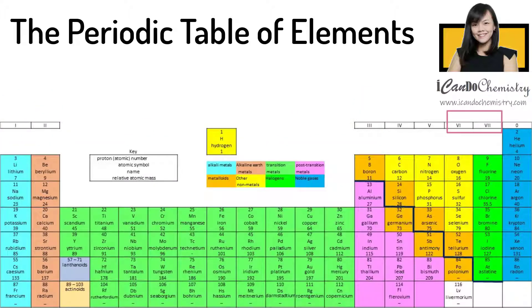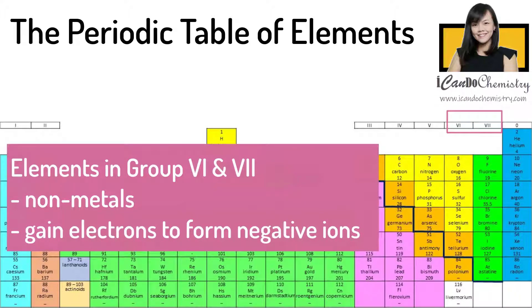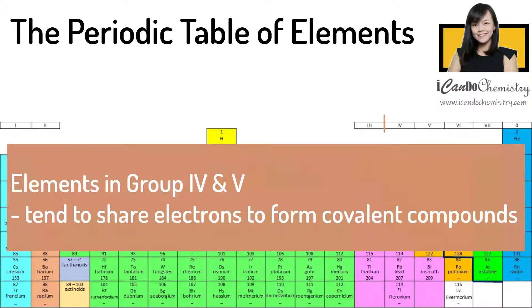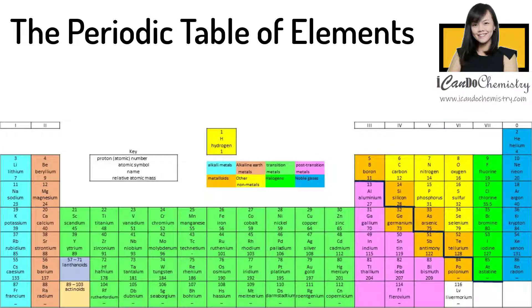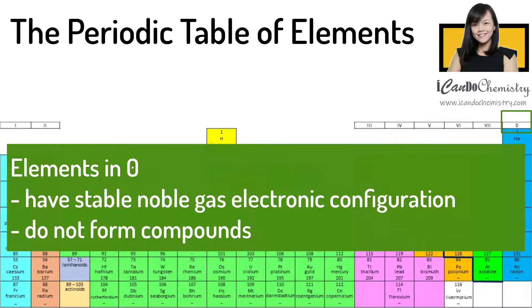So the elements in group 6 and 7, they are non-metals and they gain electrons to form negative ions. The charge is negative 2 and negative 1 respectively. Elements in group 4 and 5, they tend to form covalent instead of ionic compounds. They share electrons to form covalent bonds. Now those elements in group 0 that we call the noble gases, they have stable electronic configuration. Hence, they do not undergo chemical reaction and they do not form compounds.